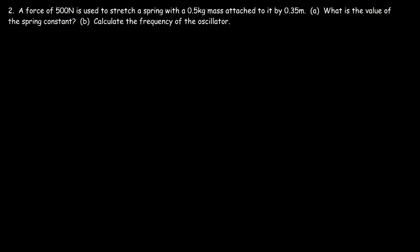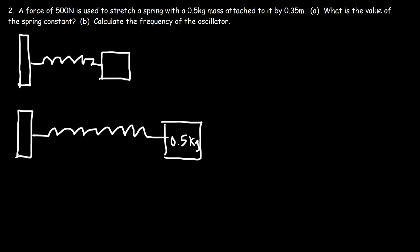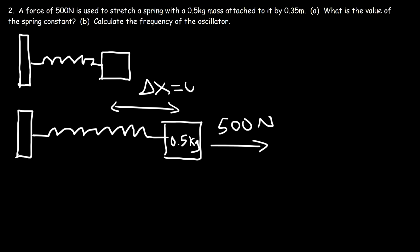Number two: a force of 500 newtons is used to stretch a spring with a 0.5 kilogram mass attached to it by 0.35 meters. What is the value of the spring constant, and calculate the frequency of the oscillator? So let's say this is a wall and we have a spring attached to it with a mass. We're going to stretch the spring using a force of 500 newtons, extending it by 0.35 meters.